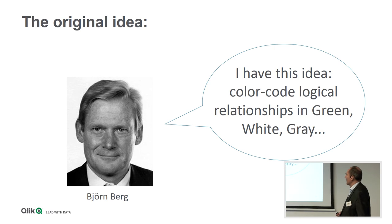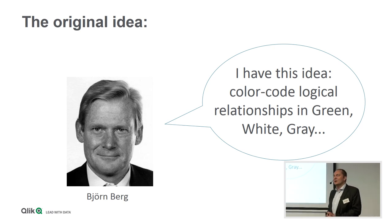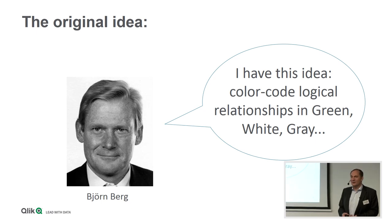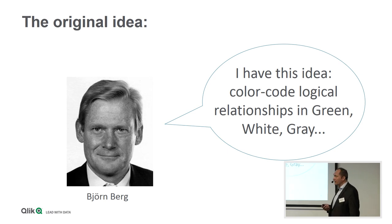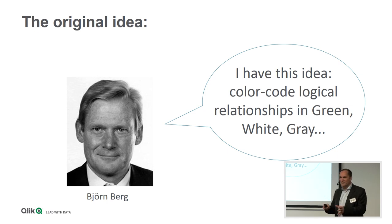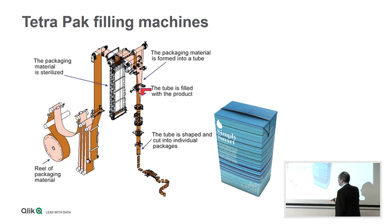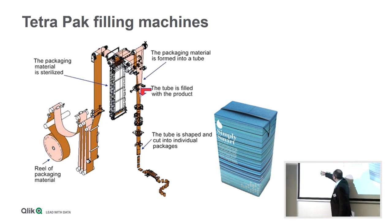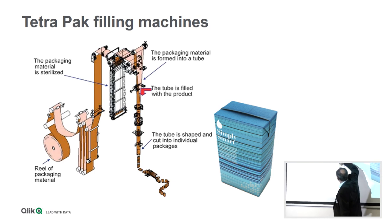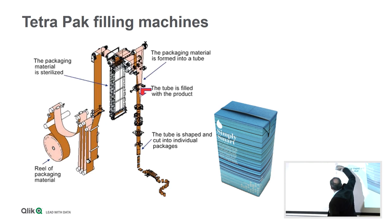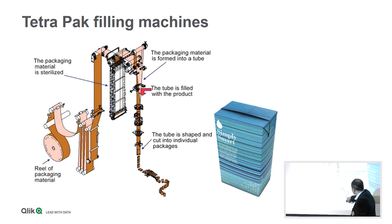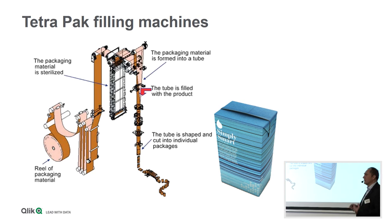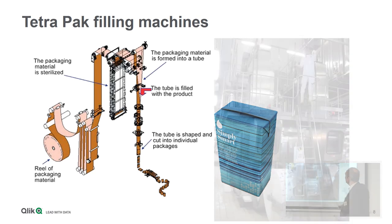It started when Bjorn came into my office and said he wanted to color-code information using green, white, and gray. Bjorn came from Tetra Pak, which is a company in the city of Lund in Sweden — they make milk cartons. The Tetra Pak business idea is to sell huge machines that take a roll of paper, fold it into a package, pour milk into the tube, glue it, cut it, and you get a milk carton. They sell these machines at an expensive price, and these machines are huge beasts.